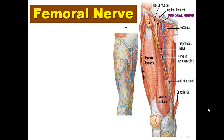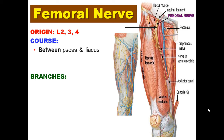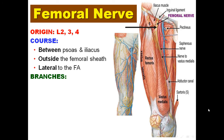Starting with the femoral nerve. We'll talk about the origin, the course, and the branches. Regarding the origin, it arises from the posterior divisions of L2, L3, and L4. Regarding the course, it lies between the psoas muscle and iliacus muscle. It is outside the femoral sheath and lateral to the femoral artery. Regarding the branches, any nerve gives cutaneous branches to the skin, muscular branches to the muscles, and articular branches to the joints.